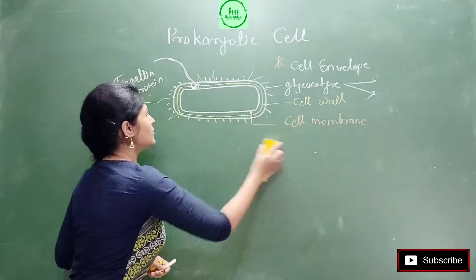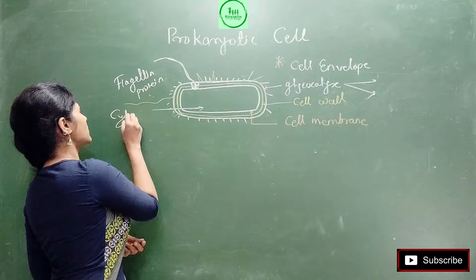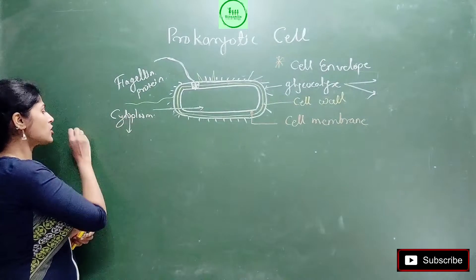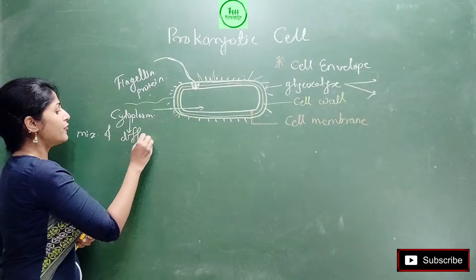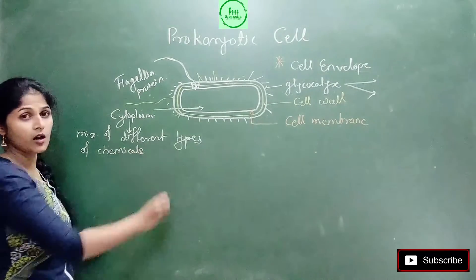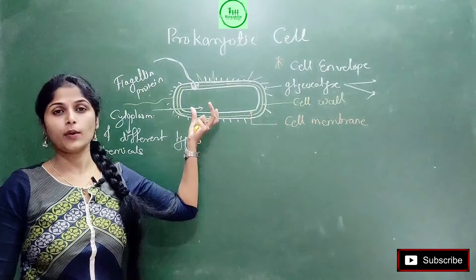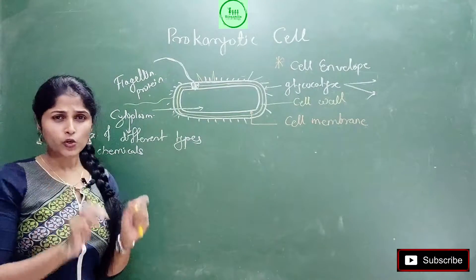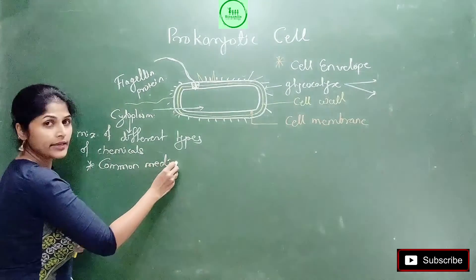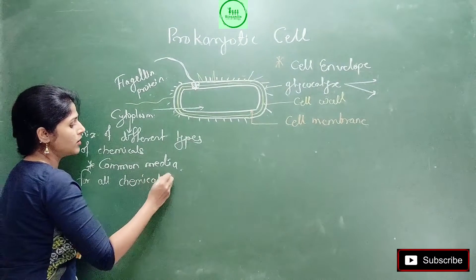Inside cell membrane, there is a presence of jelly-like substance which is called cytoplasm. Now what is this mean by cytoplasm? It's a jelly-like material, but it's a mixture of different types of chemicals. There is a large variety of chemicals - meaning, for a bacteria to survive, whatever chemicals are needed, all those chemicals are stored together, and that whole mixture is called cytoplasm.